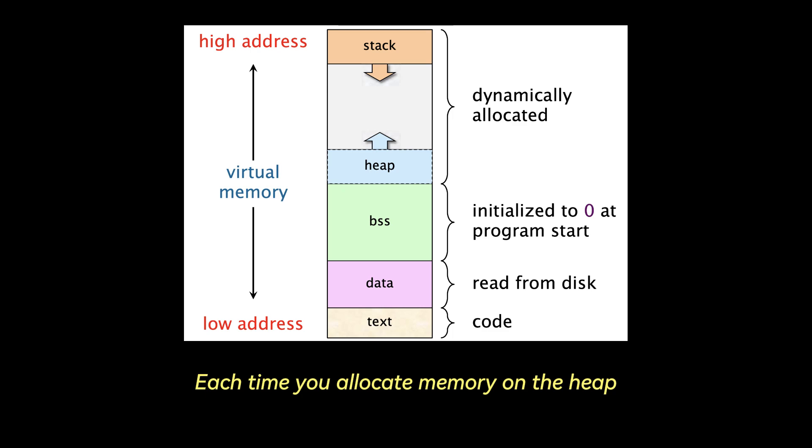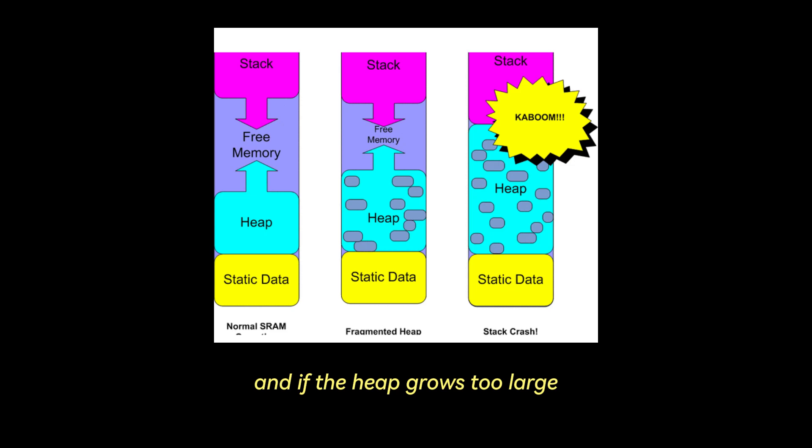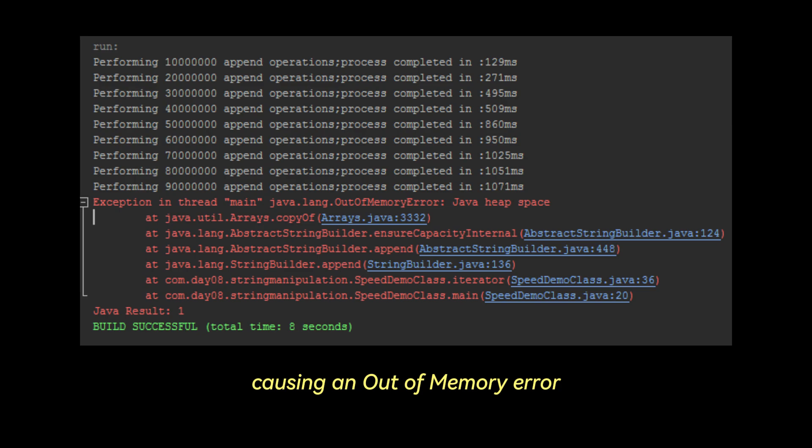Each time you allocate memory on the heap, it takes up space at a higher address than the previous allocation. And if the heap grows too large, it could eventually run into the stack memory region, causing an out-of-memory error.